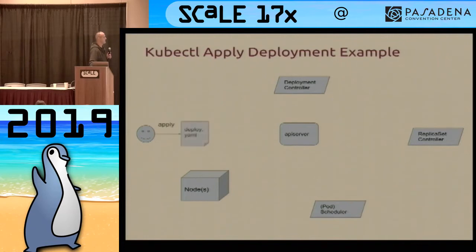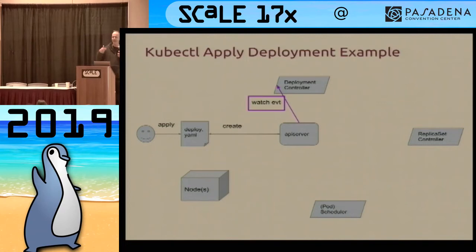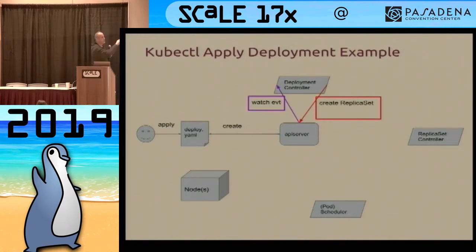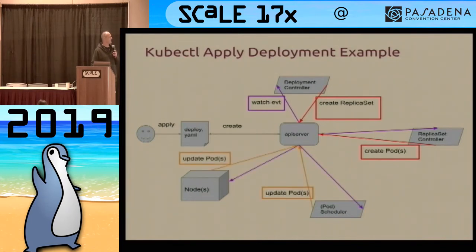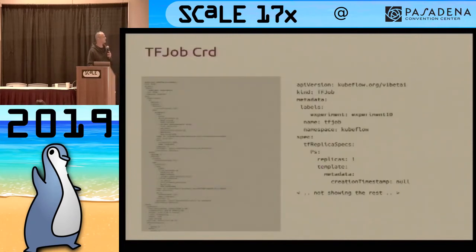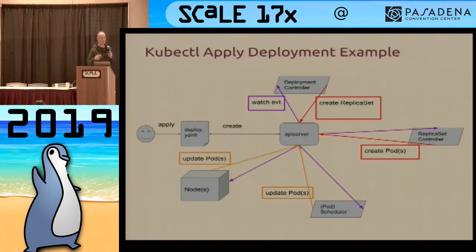How does that happen? Here's a more detailed view. You hit apply, it hits the API server with a create request. That sends a watcher event to the deployment controller. What it'll do is create a replica set. Each of these different controllers are looking for certain events to happen — when that event happens, they can do whatever they want. In this scenario, they're creating additional resources, which causes additional work to happen. The replica set controller does its job, the pod scheduler does its job, the node does its job. Those last two — the update pods — are actually updating the status of a pod resource maintained by Kubernetes.